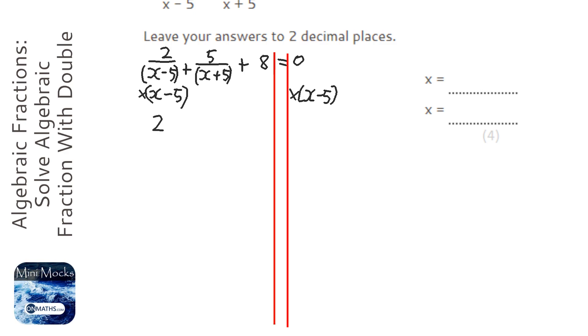When I times the first thing by that, I just end up with 2, which is great. The second thing, when you times a fraction by a number, you times the top of it. So it becomes 5 brackets (x minus 5), the bottom stays the same, so it's just the (x plus 5) that was there already.